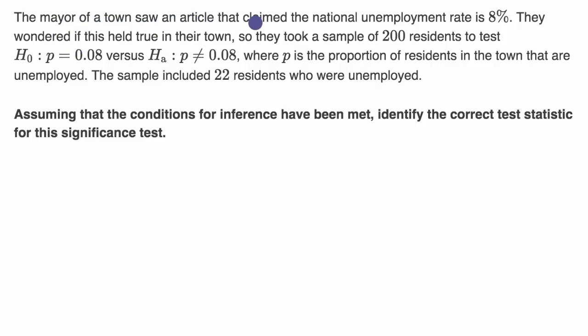The mayor of a town saw an article that claimed the national unemployment rate is 8%. They wondered if this held true in their own town. So they took a sample of 200 residents to test the null hypothesis that the unemployment rate is the same as the national one versus the alternative hypothesis, which is that the unemployment rate is not the same as the national, where P is the proportion of residents in the town that are unemployed.